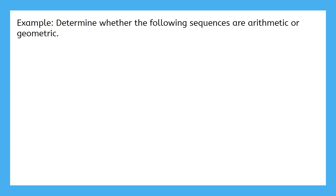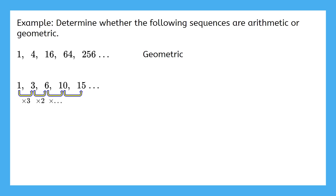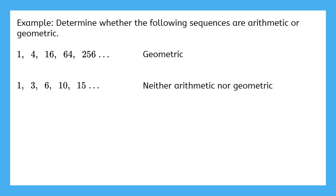Let's do one final example. Determine whether the following sequences are arithmetic or geometric. For each example, pause the video and try to identify it. This one is multiplying by 4 each time, so it's geometric. How about this one? Remember to pause and give it a try. If we try multiplication on this one, they immediately don't match. So what about addition? This looks sort of like addition, but these numbers have to be the same to be an arithmetic sequence. Since we can't find an arithmetic or geometric pattern here, this sequence is neither arithmetic nor geometric — that happens more often than you might think. This last one is adding 11 each time, so it is arithmetic.